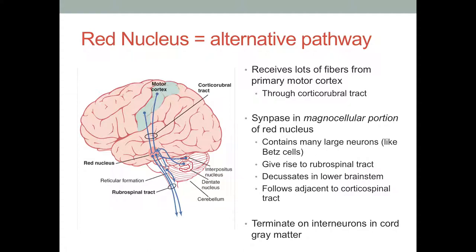It decussates or crosses in the lower brainstem and goes right next to the corticospinal tract. The best way to think about this is like two elevators getting you to the third floor — if one is taken, you can take the other. If you cannot access the main motor outflow unit, the corticospinal pathway, you can take the rubrospinal pathway to get to the same cord areas. These terminate on interneurons in the cord gray matter, which has a lot to do with control of muscles in reflexes and spasticity, which we'll talk about on Monday in class.